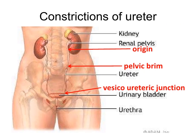Constrictions of ureter. The lumen of the ureter is not uniform throughout. At certain places it is narrowed, and these are known as the constrictions of ureter. The first constriction is at the pelvi-ureteric junction where the renal pelvis becomes continuous as the ureter, lying about 5 cm from the hilum of the kidney. The second constriction is at the pelvic brim where the ureter crosses the common iliac artery. The third constriction is at the ureterovesical junction where the ureter enters into the bladder. These constrictions are clinically important because they are the common sites where ureteric calculi lodge, obstructing the ureter.